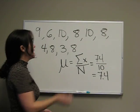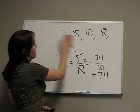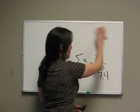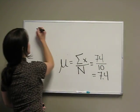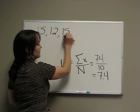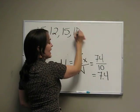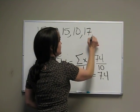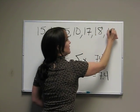Now let's talk about sample size. We're given the numbers: 15, 12, 15, 10, 17, 18, and 15.